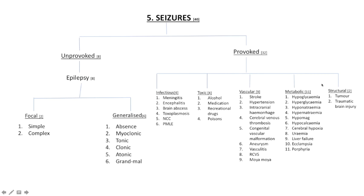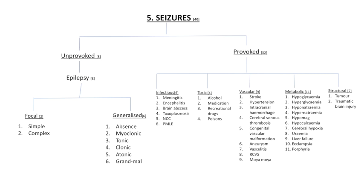Metabolic etiologies are quite common in the wards and most are reversible to a certain degree. These include hypoglycemia, hyperglycemia, hyponatremia, and hypernatremia — pairing the hypos with the hypers is a helpful memory aid. Hypomagnesemia and hypocalcemia can also induce seizures; hypocalcemia is associated with neuromuscular excitability, hence Trousseau's and Chvostek's signs, tetany, and perioral paresthesia. Cerebral hypoxia, uremia in patients with CKD or acute-on-chronic kidney disease, liver failure — which causes seizures via hypoglycemia and hepatic encephalopathy — sickle cell disease, and porphyria round out the 11 metabolic causes.